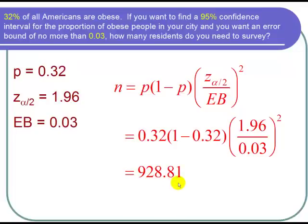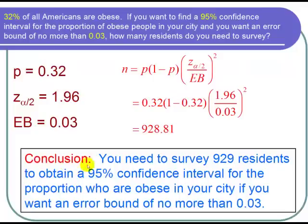When finding a sample size, we always round up — that's a conservative estimate to make sure our error is no more than 0.03. Less is okay. So I can conclude that you need to survey 929 residents to obtain a 95% confidence interval for the proportion who are obese in your city with an error bound of no more than 0.03.